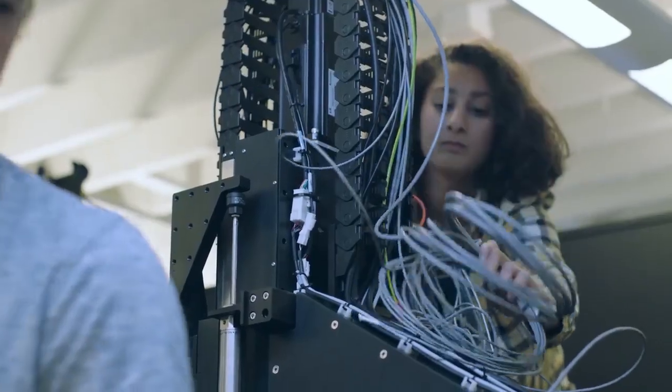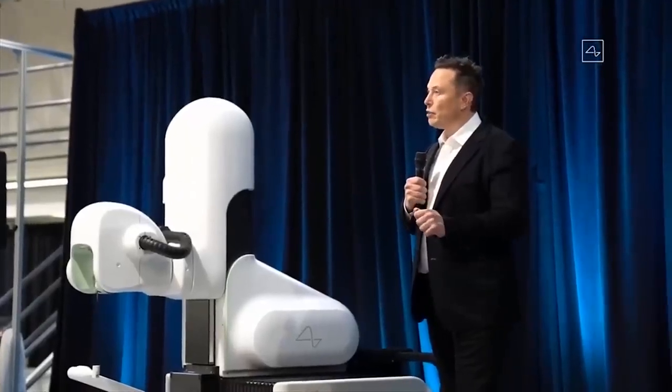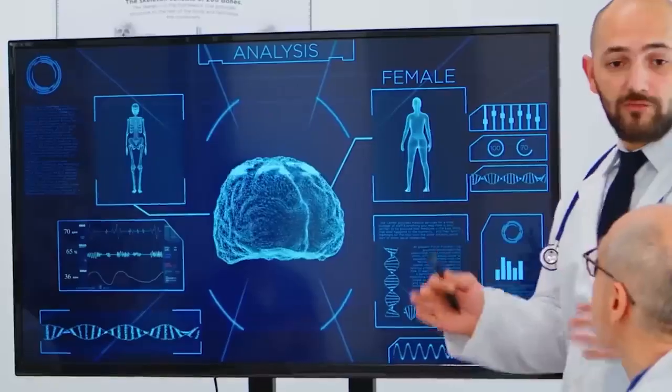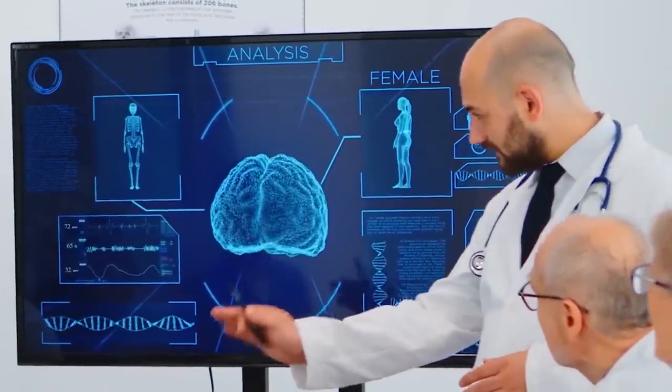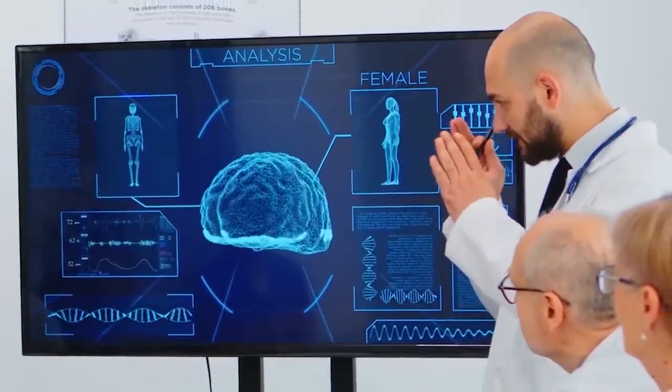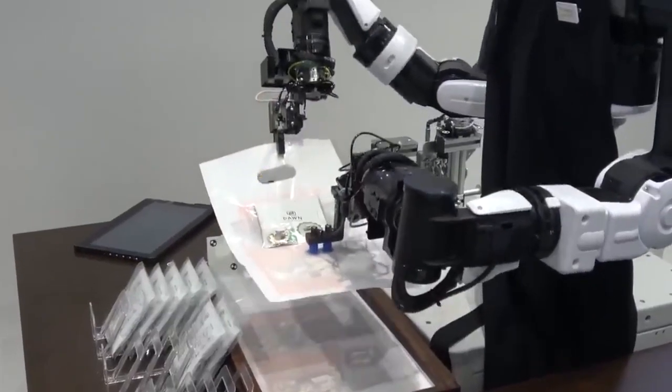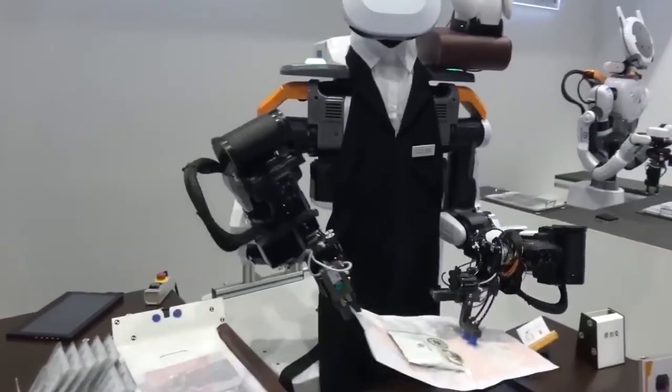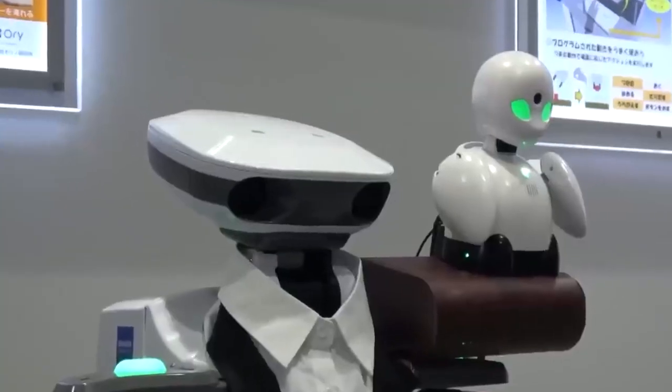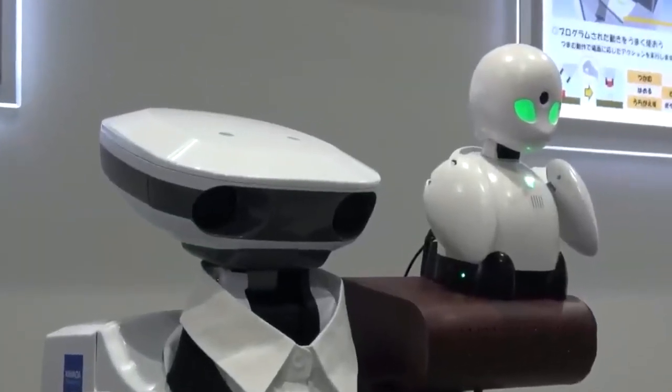Neuralink presented the R1, together with the chip, at their show-and-tell event on November 30, 2022. Speaking on the R1, Musk said, We ultimately want this robot to do essentially the entire surgery, so everything from incision, removing the skull, inserting electrodes, placing the device, and then closing things up. We want to have a fully automated system. Without general anesthesia, the robot could attach the link in under an hour. The patient could leave the hospital on the same day.